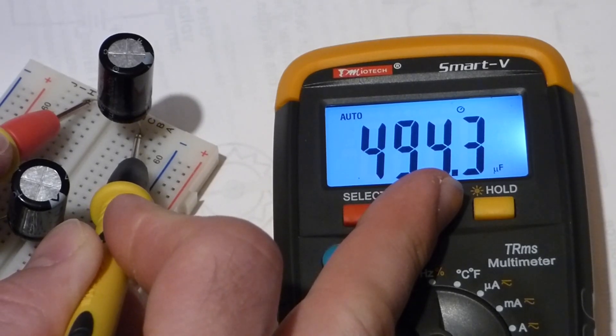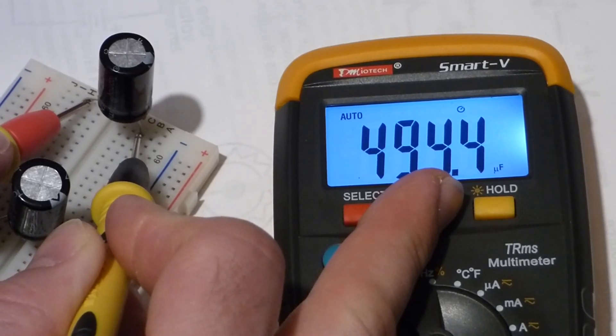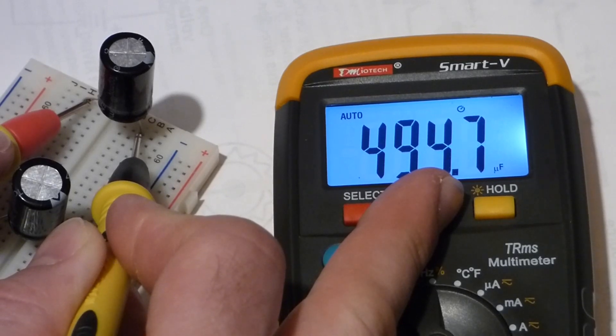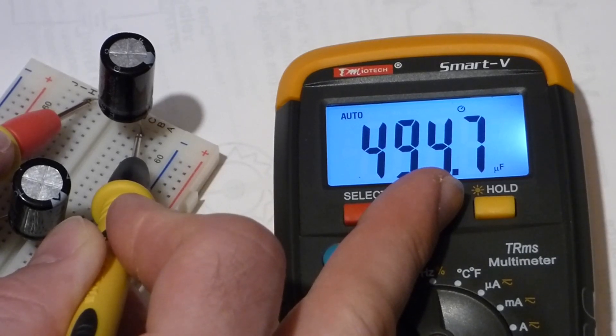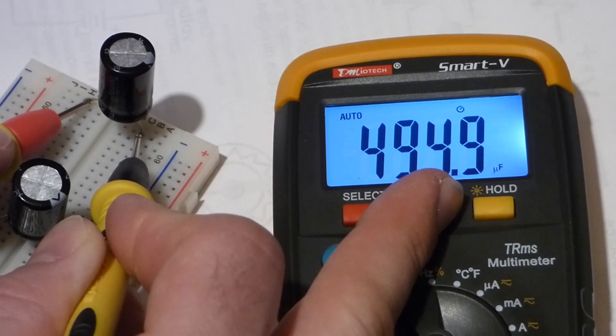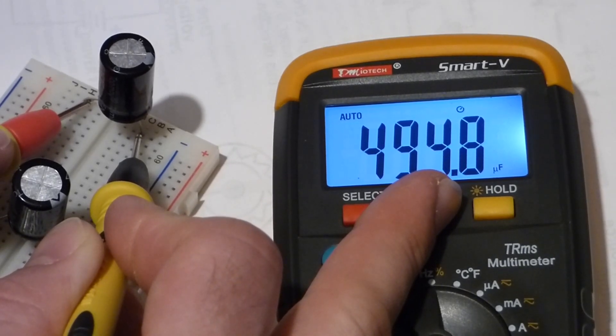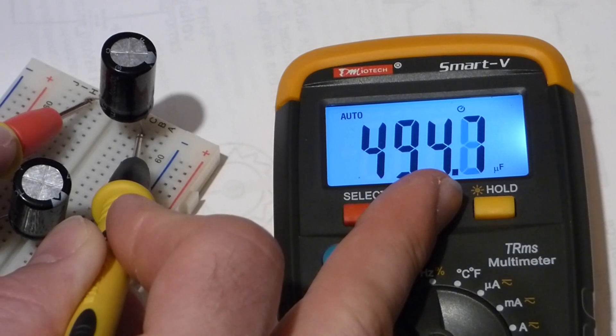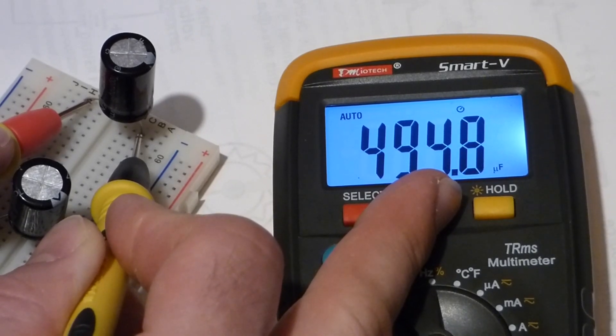You should see a little symbol—it's called a mu but looks like a little u—for microfarad. Microfarad is one millionth of a farad. You need one million microfarads to equal one farad. We got 495 microfarad. As I said, this is a 470 microfarad capacitor, so this is just a tiny bit higher.